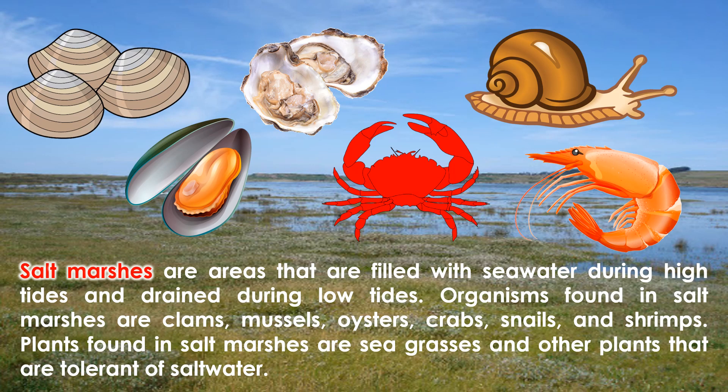Salt marshes are areas that are filled with seawater during high tides and drain during low tides. Organisms found in salt marshes are clams, mussels, oysters, crabs, snails, and shrimps. Plants found in salt marshes are seagrasses and other plants that are tolerant of salt water.